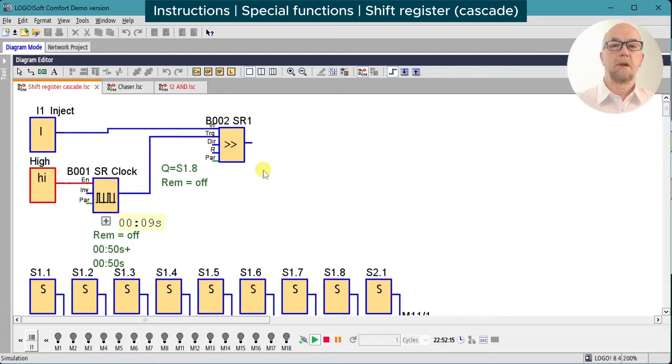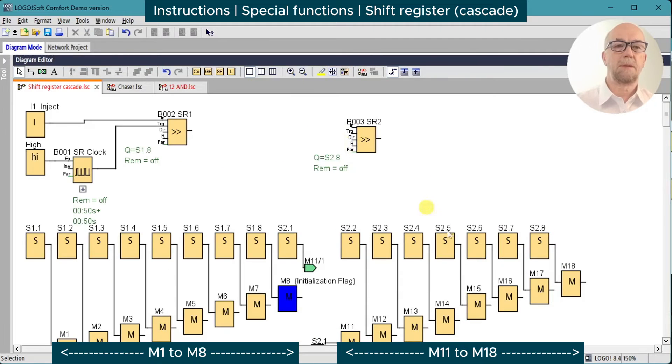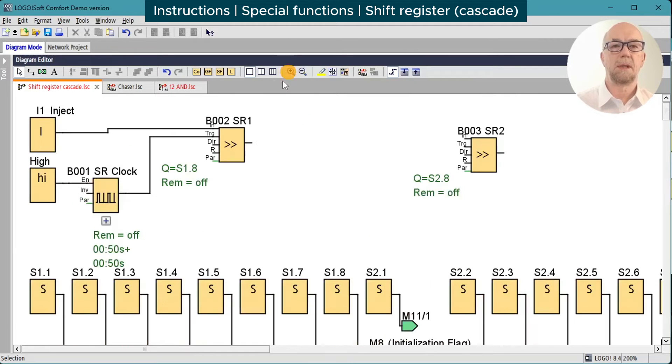Okay, so far so good. We quit the simulation. If we paste in the second shift register and all the monitoring bits that we prepared earlier, we can zoom in a little, take the output of the first shift register to the input of the second shift register, and we'll need to trigger from our clock over here again.